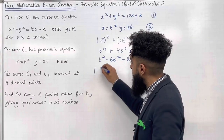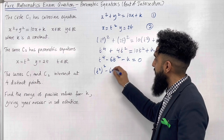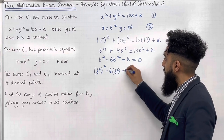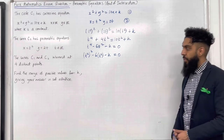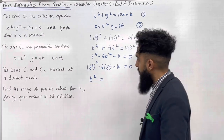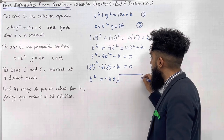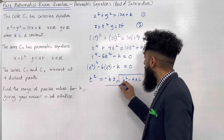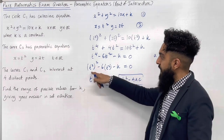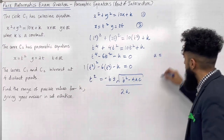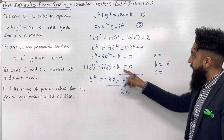Now I'm going to rewrite this equation so that it looks like a quadratic equation. The first term can be rewritten as (t squared) squared, the second term as minus 6 times (t squared), and then minus k equals 0. For this quadratic, a is the coefficient of (t squared) squared, which is 1; b is the coefficient of t squared, which is minus 6; and c is minus k.